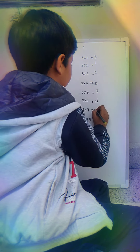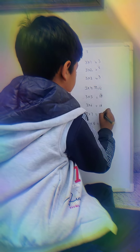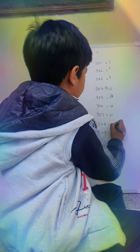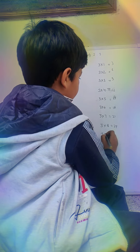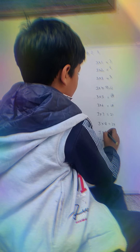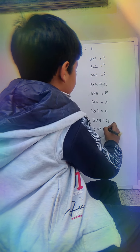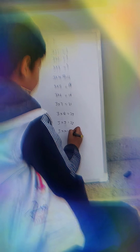3 times 7 is 21, 3 times 8 is 24, 3 times 9 is 27, 3 times 10 is 30.